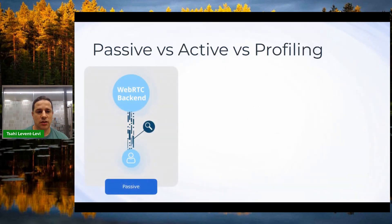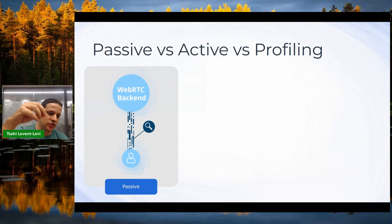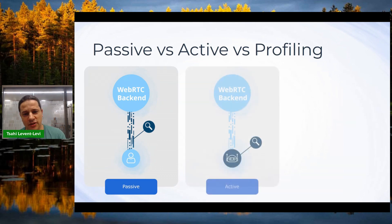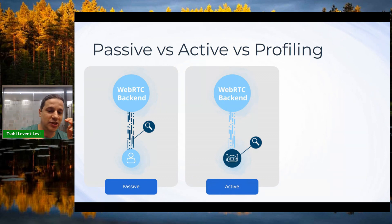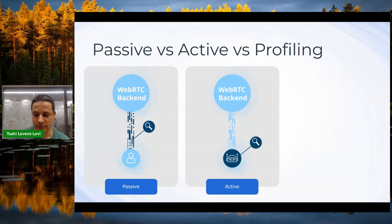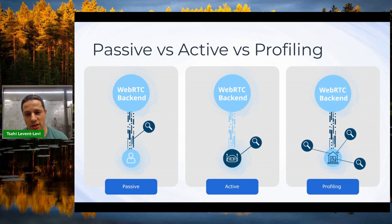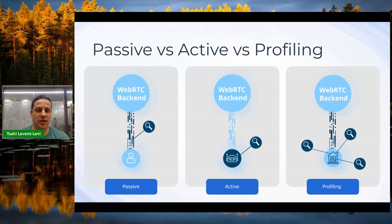It requires specific testing over and above what you get from the peer connection. There are three approaches: passive monitoring — look at WebRTC statistics and actual traffic to the RTC backend; active monitoring — replace the user with a bot you control and review what it does; and profiling — run tests to understand the user's network environment independently of a specific call.